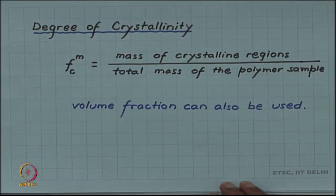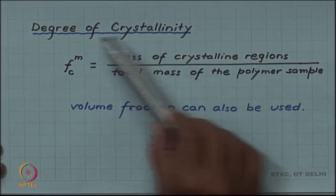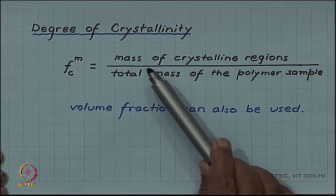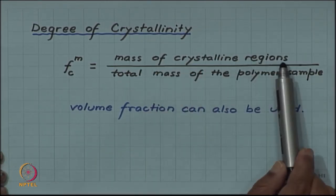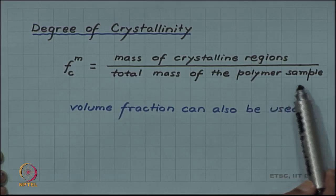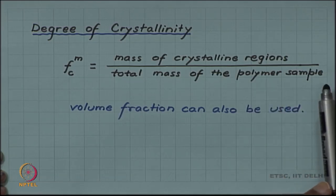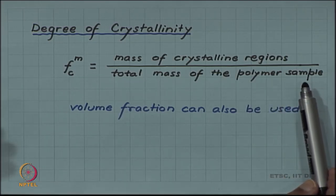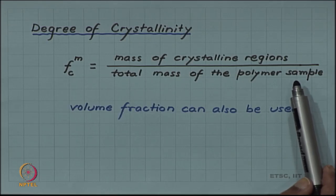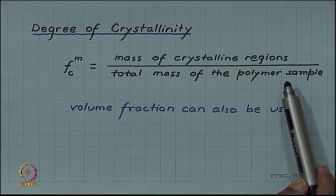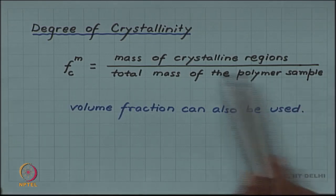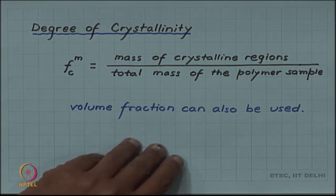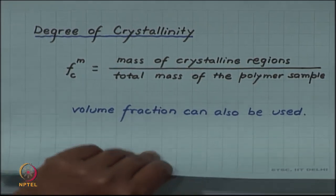A factor called degree of crystallinity is defined, which is simply the mass of crystalline region divided by the total mass of the polymer sample. This tells us what fraction of a semi-crystalline polymer is crystalline and what fraction is amorphous. Instead of mass fraction, one can use volume fraction as well.